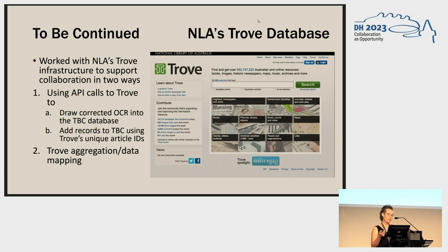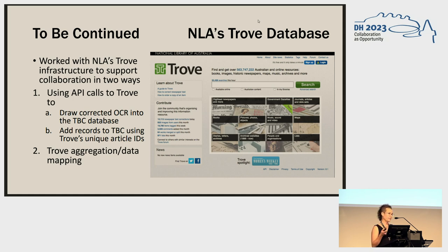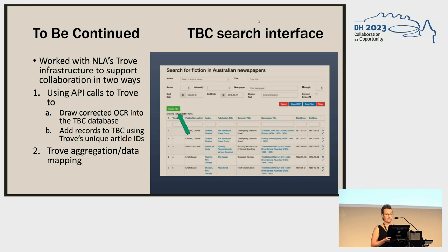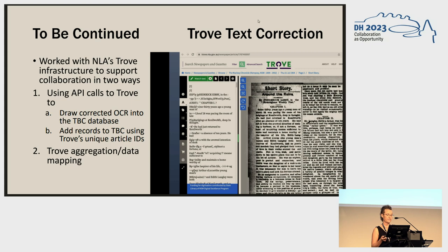The platform fostered two main modes of collaboration, both possible because TBC was built in relation to the National Library of Australia's existing digital infrastructure — the Trove database. The picture on the right is Trove's graphic user interface circa 2020. TBC could use API calls to Trove to establish a simple architecture that allowed members of the public to engage with the database in two main ways. First, they could correct OCR errors in the digital text: they'd find a story of interest in the search interface, then navigate to Trove's text curation interface and correct the OCR.